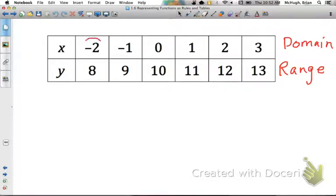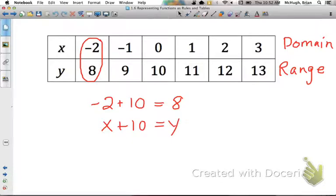For instance, if we look here at negative 2 and 8. So I want to do something to negative 2 that after I've done it, is going to give me 8 as an output. And if we start out really simple, maybe we just try addition. If I could add something to negative 2 to get 8, what would that something be? And the answer would be, it would be 10. Negative 2 plus 10 is 8. So my first thought is maybe, just maybe, if I do x plus 10, that will be my rule for getting y.